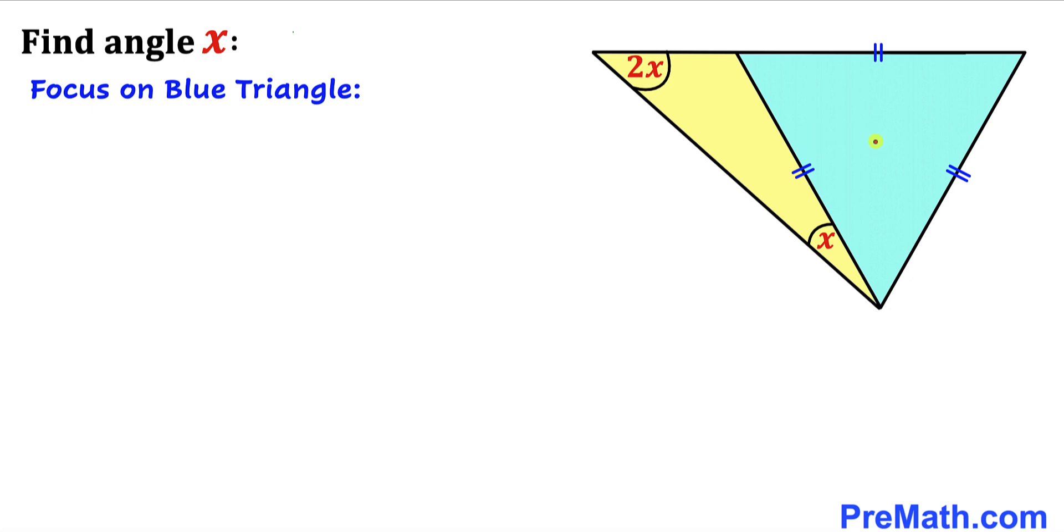Let's focus on this blue triangle and we know that this is an equilateral triangle since all these sides are equal in length, so therefore all these three angles in this triangle must be equal as well.